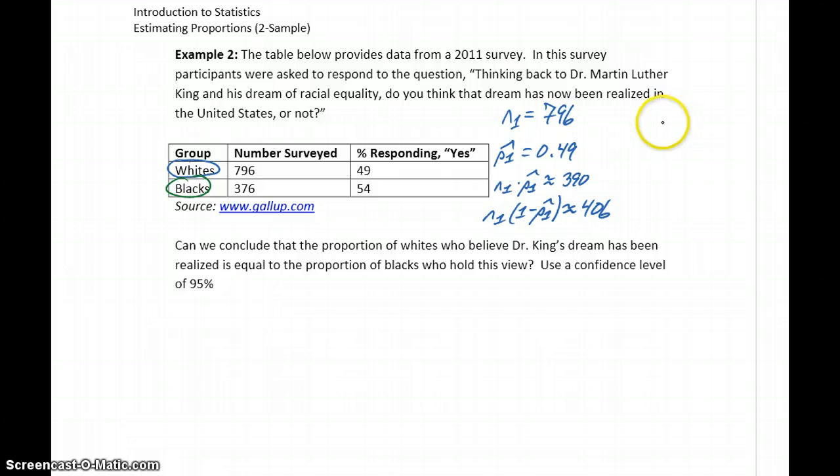For the second group, blacks who responded, our sample size is 376. Our sample proportion, P2 hat, is 0.54. So we can calculate our number of successes as 203 and our number of failures as 173.